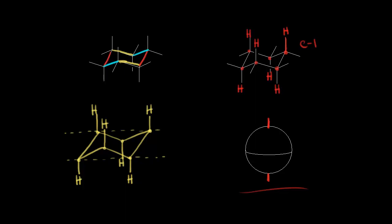Next we need to think about the equatorial hydrogens. They're called equatorial because you could think about them as being along the equator of the ring. So if this is the Earth, we know that this is the equator — these are kind of out to the side. And they alternate too. At carbon one, this equatorial hydrogen is down relative to the plane of the ring. At carbon two, this equatorial hydrogen is up relative to the plane of the ring. So we start down and then up.